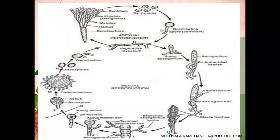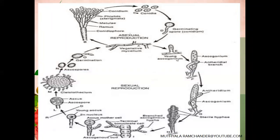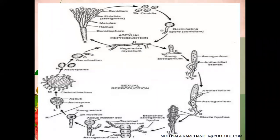The young Ascogonium develops into a large club-shaped structure. The large club-shaped Ascogonium receives more number of haploid nuclei with cytoplasm. In the matured stage, the Ascogonium is filled with more number of haploid nuclei.